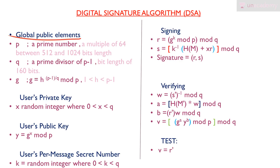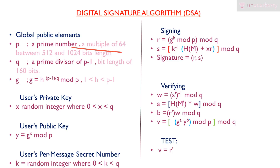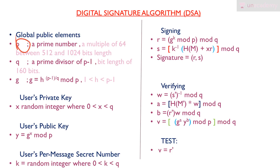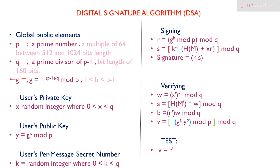First we need to find the global public elements: p, q, and g. The value p is a prime number with constraints: its bit length must be between 512 and 1024 bits and must be a multiple of 64. The value q must be a prime divisor of (p − 1) — meaning it is both a factor of (p − 1) and a prime number — and its bit length must be 160 bits.